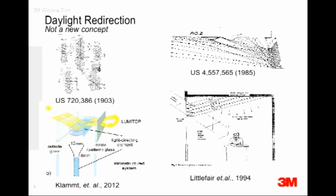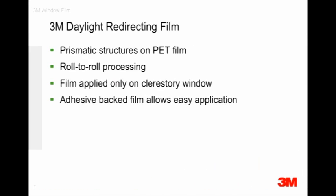We need a solution that cannot be defeated and still works in different circumstances. Daylight redirection is not a new concept — I pulled out some patents from 1903 showing what they were trying to do with redirecting glass. Over the years, products have become much more sophisticated, but the fundamental reason for using them has remained the same. There are a lot of existing buildings with this problem.